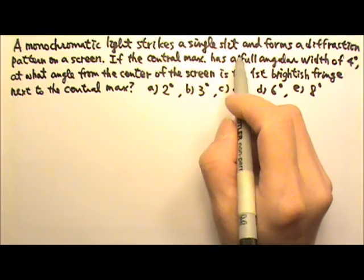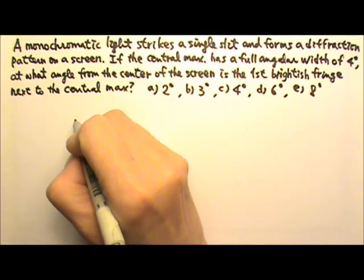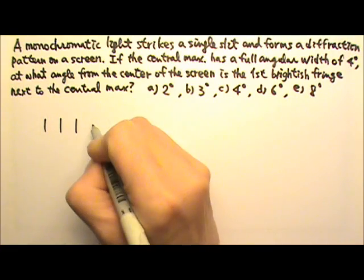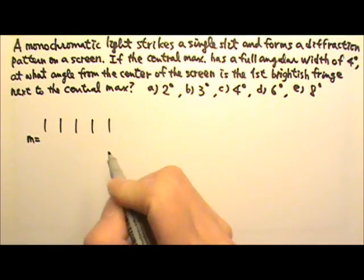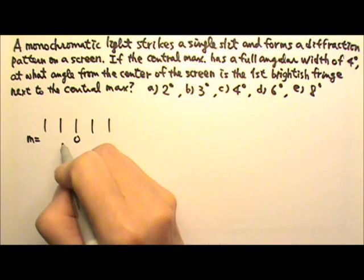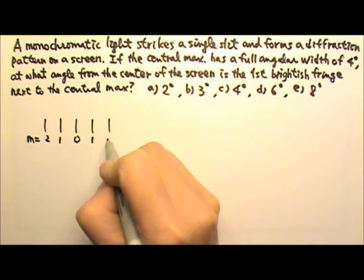We have a single slit diffraction, so the pattern on the screen will be like this. If I mark equal distances over here, M equals 0, that's the center of the screen, and then 1, 2.